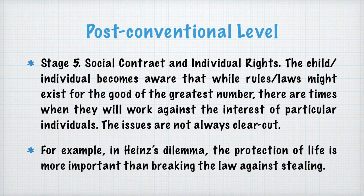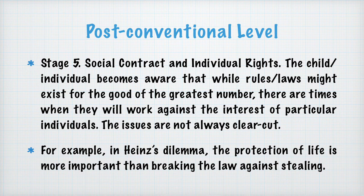The next level is the post-conventional level. In this level, we have stage 5: social contract and individual rights. The individual becomes aware that while rules might exist for the good of the greatest number, there are times when they will work against the interest of particular individuals. The issues are not always clear cut. For example, in Heinz's dilemma, the protection of life is more important than breaking the law against stealing.